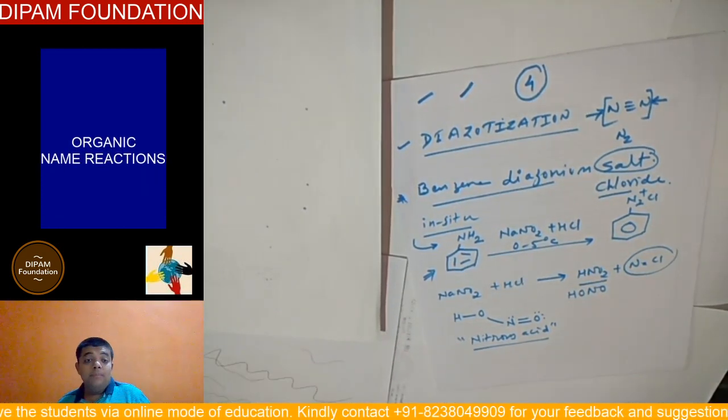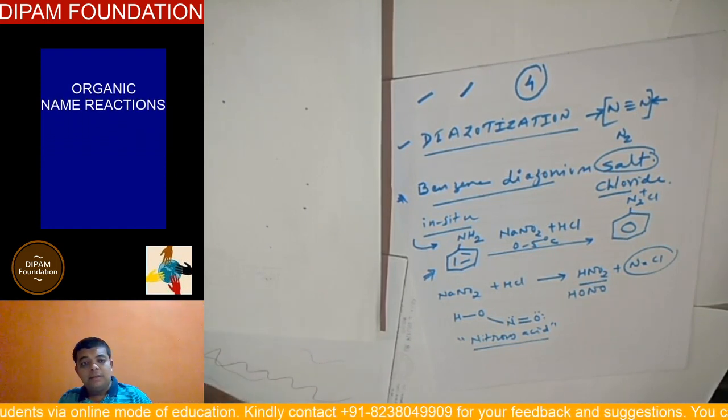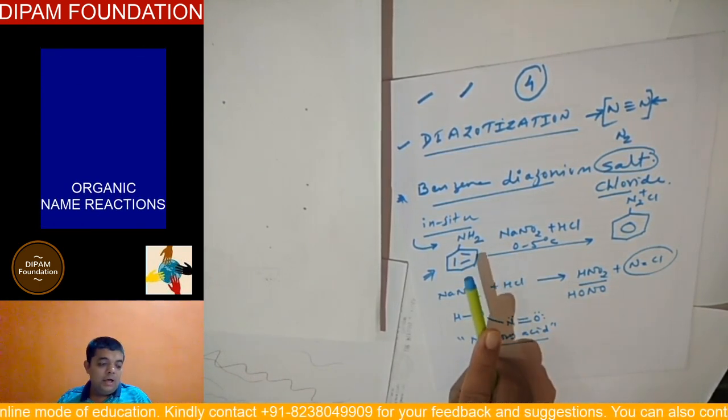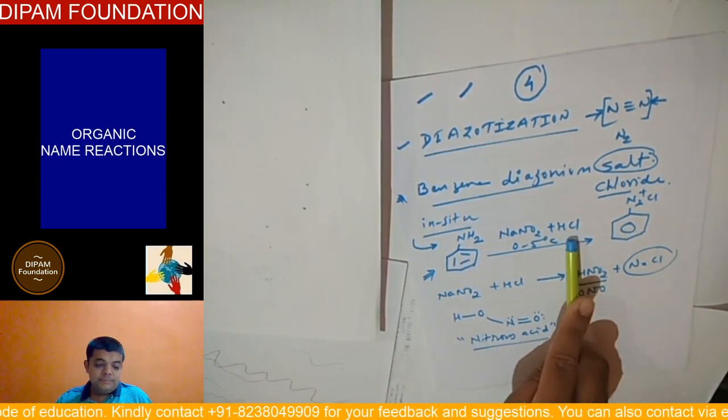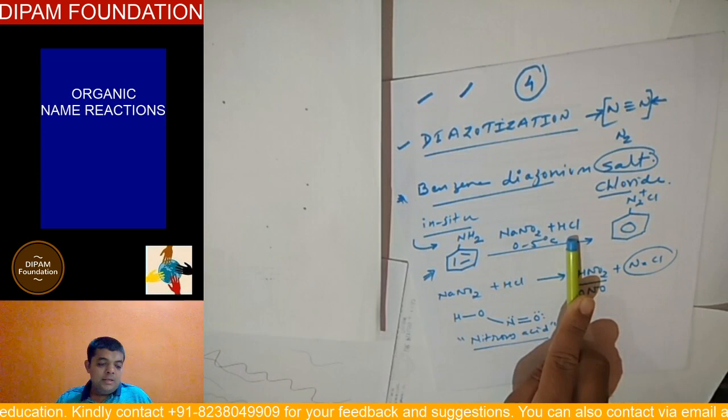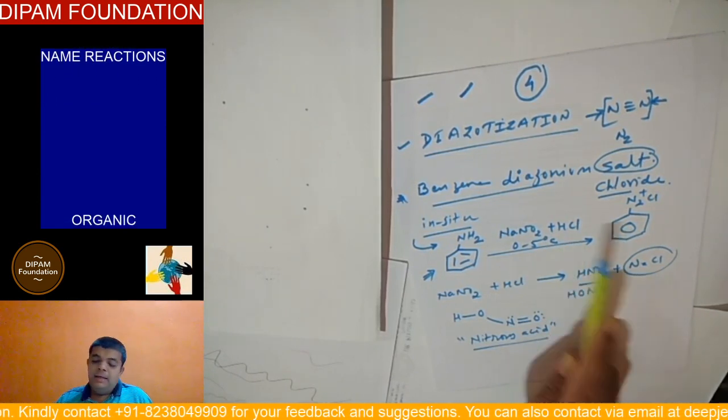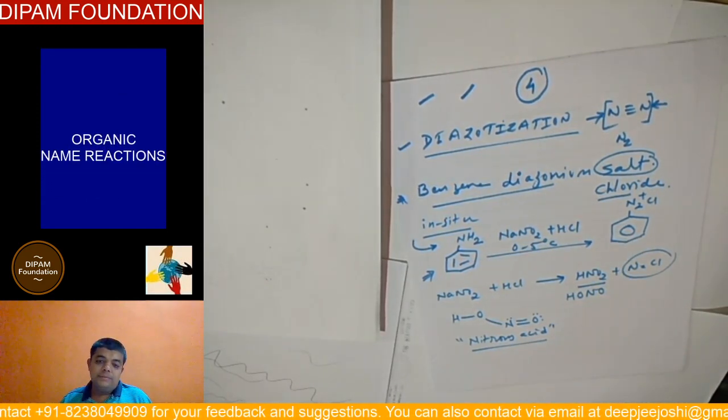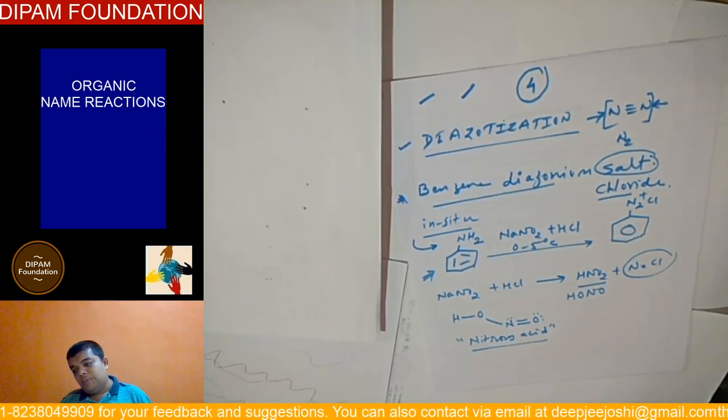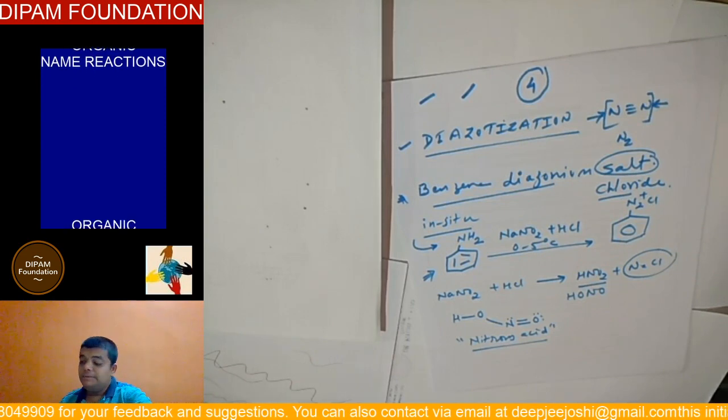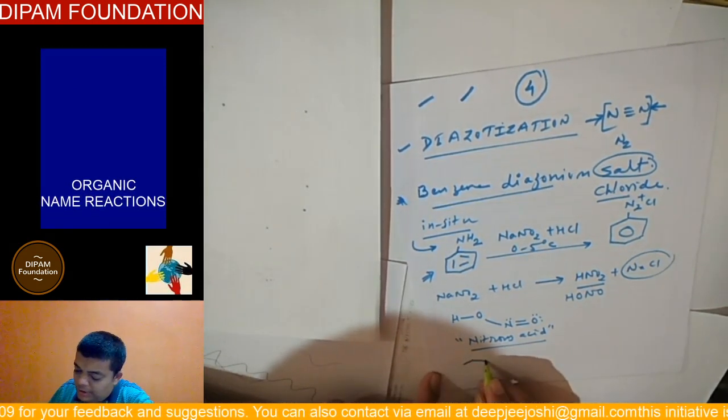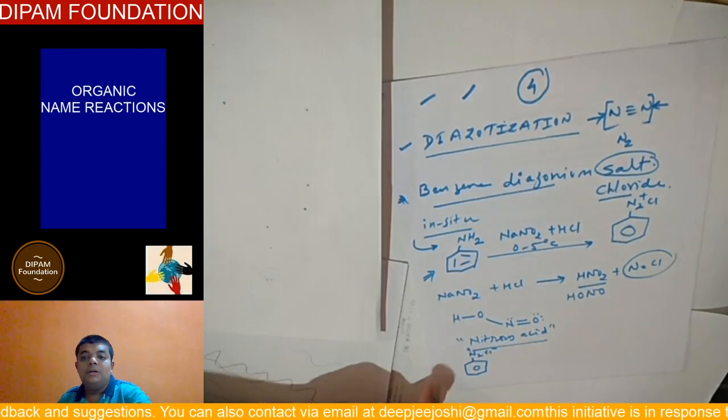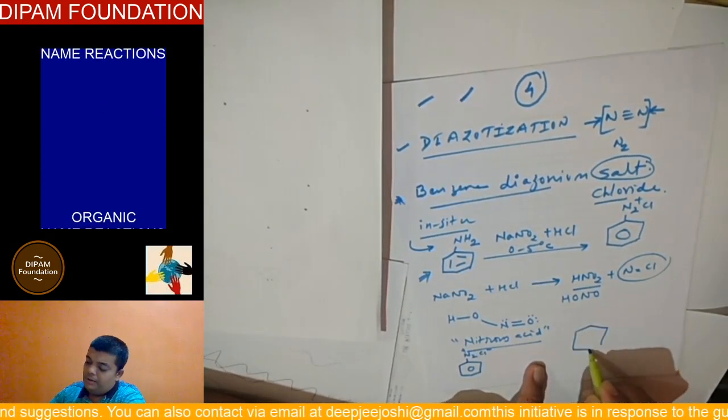It is very well written in the book and I will just take a moment and read out that particular paragraph. When a cold solution of a primary aromatic amine in a dilute mineral acid is reacted, it results in the formation of arine diazonium salt where this phenomenon is called diazotization reaction. This phenomenon is called diazotization reaction. I will make a little clear picture.